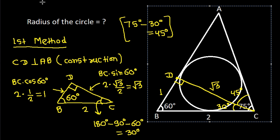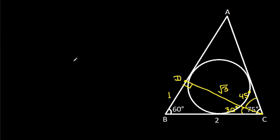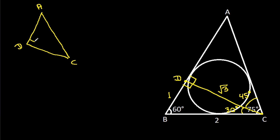Now, in triangle ACD, angle ADC is 90 degrees and angle ACD is 45 degrees. So angle CAD is also 45 degrees. That means AD = CD, and since CD = √3, we get AD = √3.